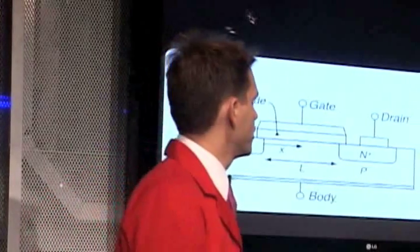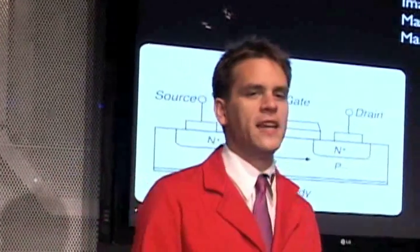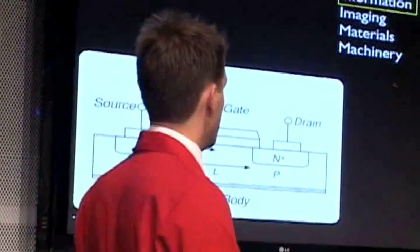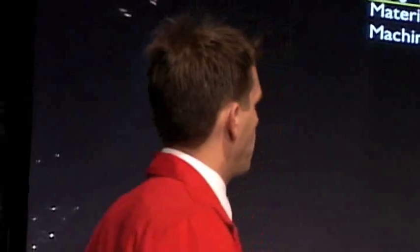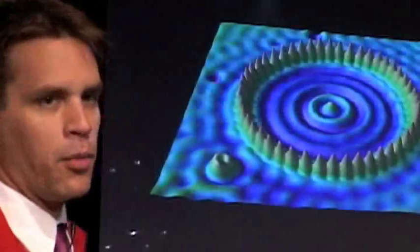The second thing Feynman suggested is that we needed a revolution in our ability to image things. At the time, the electron microscope was a relatively new idea, and Feynman argued that we needed to make that microscope much, much better. We've not only done that, but in the last 20 years we've created a whole new class of microscopes called scanning probe microscopes.